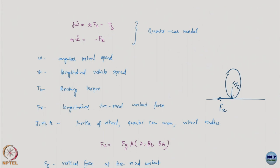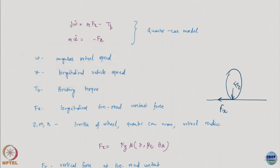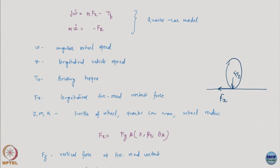The quarter car model looks something like this. Basically, the state variables are omega and v, which is the angular vehicle speed and the longitudinal vehicle speed. Since it is a quarter car model, it has just one v. The factors affecting these are your braking torque — that is sort of your control — and then you have fx, which is the longitudinal tyre-road contact force. This is something that actually depends on your tyre and so many other factors like weight, and so on. So this is something you have to arrive at for different systems differently.